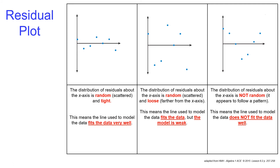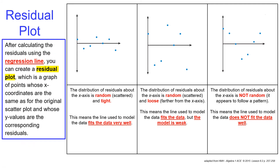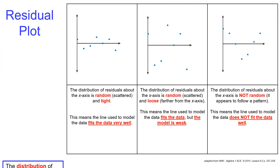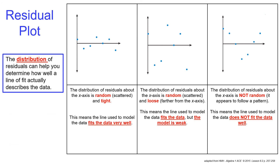Now let's look at residual plots. After calculating your residuals using your line of fit or regression line, you can create a residual plot where your x values are the same from your original scatter plot, but the y values are the new corresponding residuals you found. You can then look at the distribution of the residuals to determine how well the line of fit describes the data.